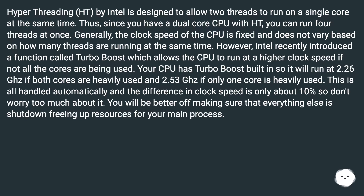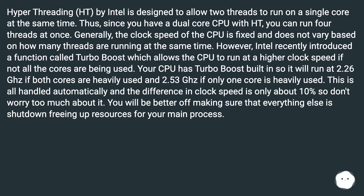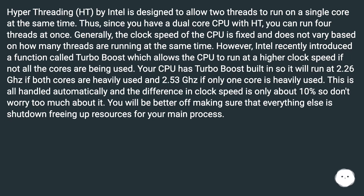However, Intel recently introduced a function called Turbo Boost which allows the CPU to run at a higher clock speed if not all the cores are being used. Your CPU has Turbo Boost built-in, so it will run at 2.26 GHz if both cores are heavily used, and 2.53 GHz if only one core is heavily used. This is all handled automatically and the difference in clock speed is only about 10%, so don't worry too much about it. You will be better off making sure that everything else is shut down, freeing up resources for your main process.